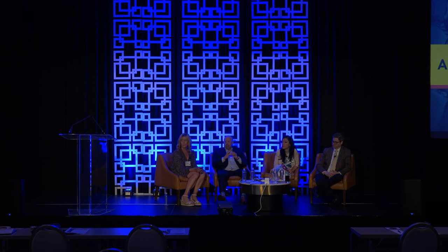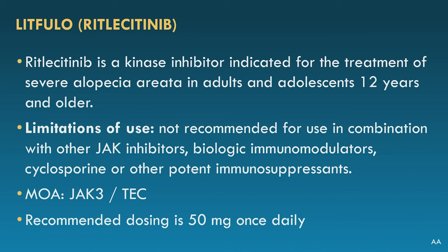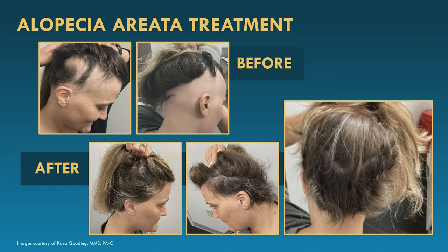Pivoting to alopecia areata. This is one of my patients — a 45-year-old female started on baricitinib. You can see her before and after photos; the after photos were taken at about nine months. The drug seems to have changed her hair color too — just kidding. That's called ombre.